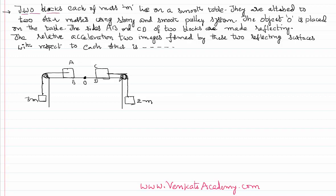The problem is like this: there are two blocks, each of mass m, lying on a smooth table. They are attached to two other masses — 2m and 3m — with the help of pulleys, and the pulleys are smooth and frictionless. The sides AB and CD of the two blocks are made reflecting, meaning those sides act as plane mirrors.